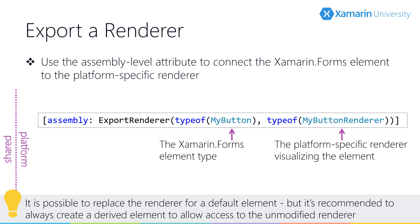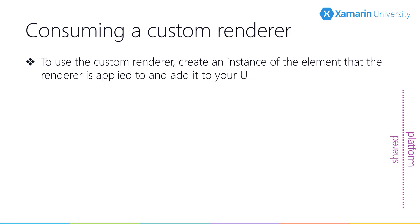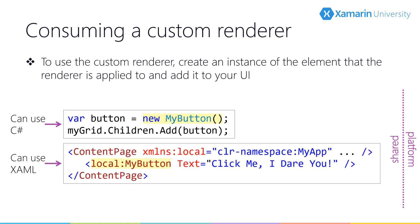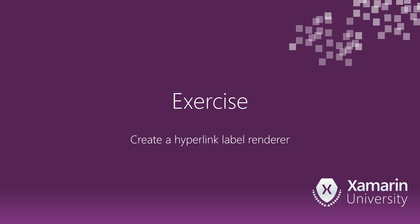Then we can go ahead and use our custom element. In C#, you would instantiate the element and add it to your visual tree. In XAML, you'd bring the XAML namespace in and add your custom type. It's now time for another exercise: creating a hyperlink label renderer.